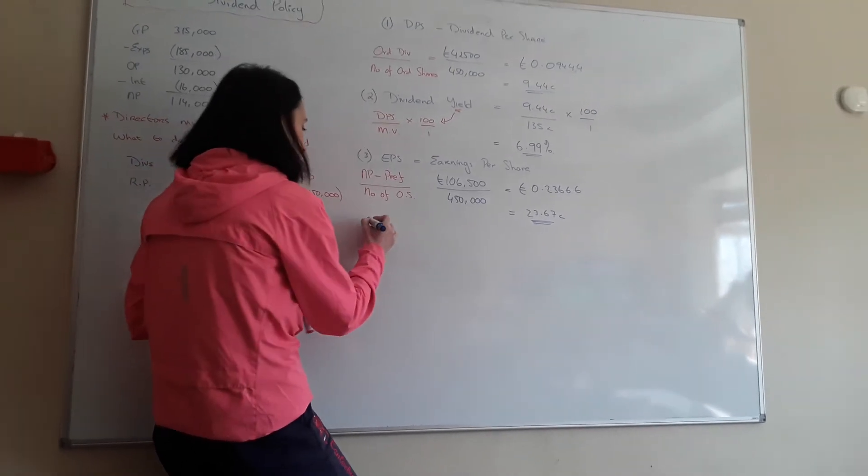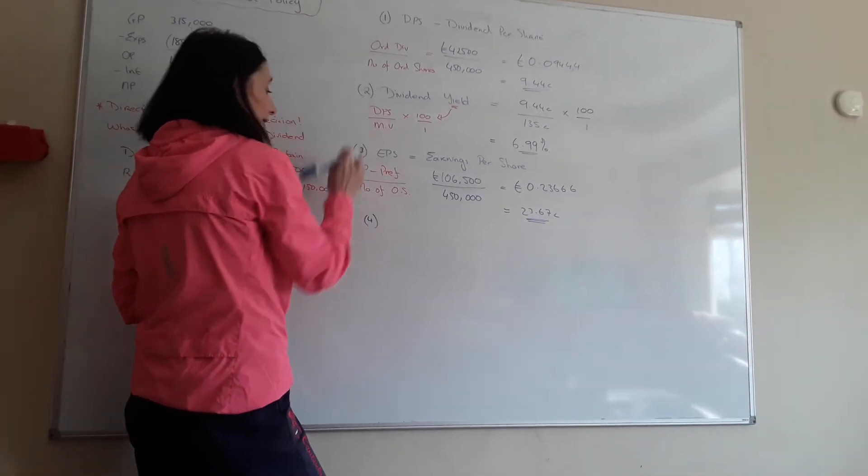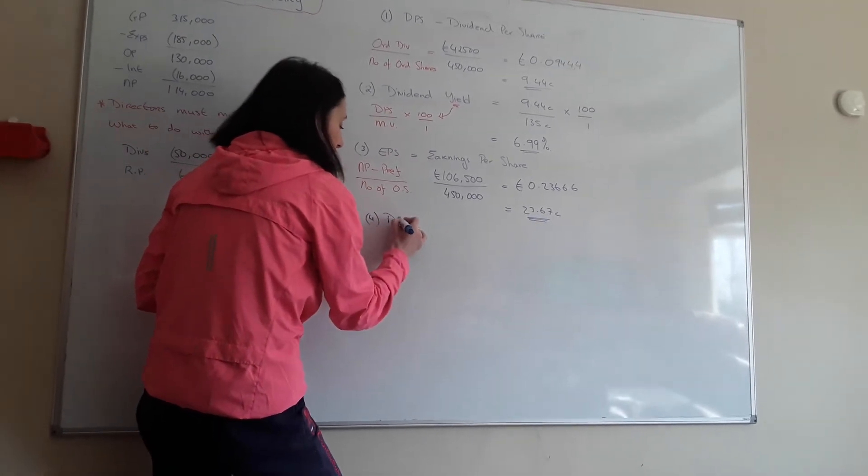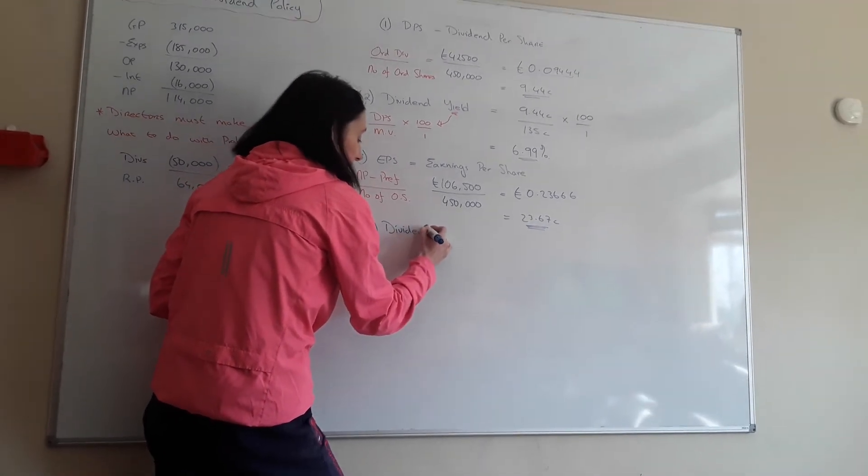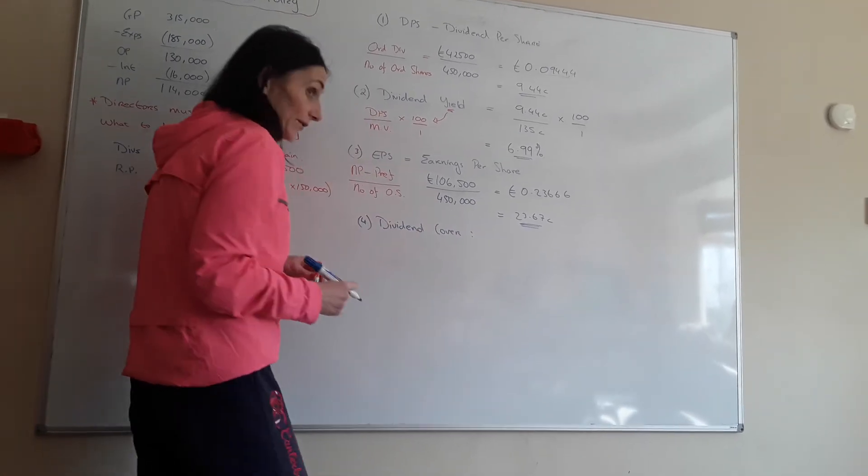Okay, the fourth one that I'm going to do with you is based on these two. And it's called your dividend cover. And basically it's just saying how many times could you have paid your dividend.